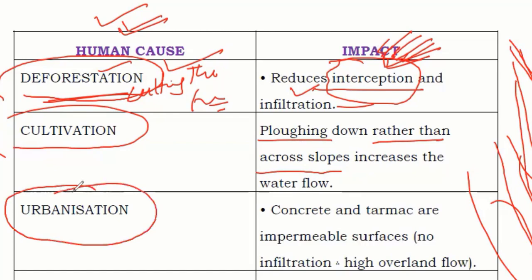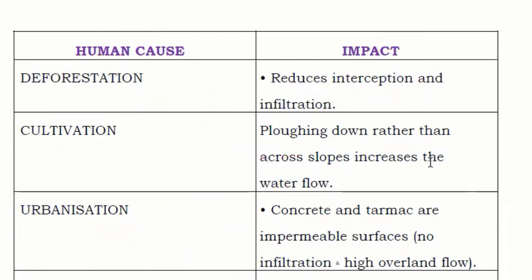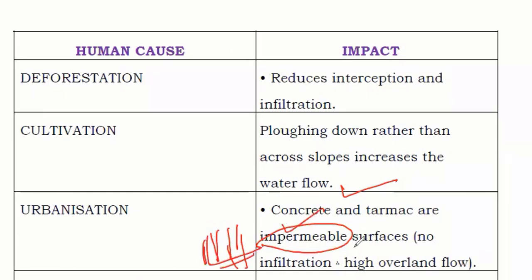Urbanization is another human cause. As cities expand, agricultural fields and trees are cleared and replaced with houses, roads, and buildings. These surfaces use concrete or tarmac, which are impermeable — water cannot go inside them. This means less infiltration occurs, water stays on the surface, and flooding results.